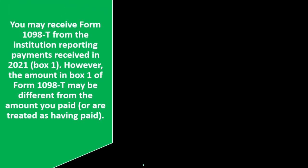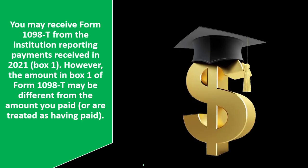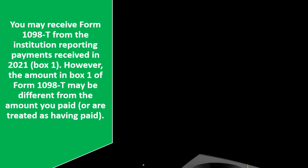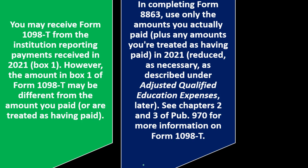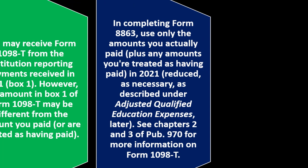You may receive Form 1098-T from the institution reporting payments received in 2021 in Box 1. However, the amount in Box 1 may differ from the amounts you actually paid or are treated as having paid. To complete Form 8863, use only the amounts you actually paid plus any amounts treated as having paid in 2021, reduced as necessary under adjusted qualified education expenses. See Publication 970, chapters 2 and 3, for more detail on Form 1098-T.